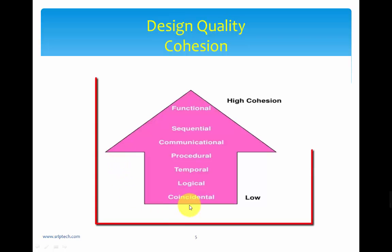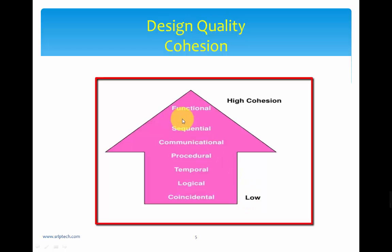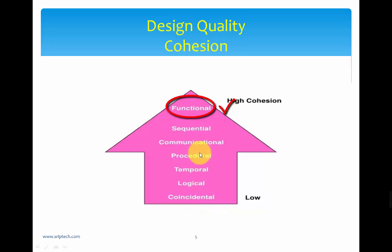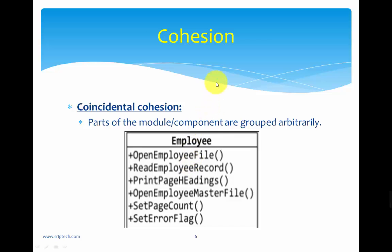There are different levels of cohesion. We start from coincidental cohesion, which is the lowest, up to functional cohesion, which is the highest. A quality design should aim for functional cohesion and avoid coincidental cohesion. There are other levels in between — logical, temporal, procedural, communicational, and sequential — which we need to understand and know when to use.